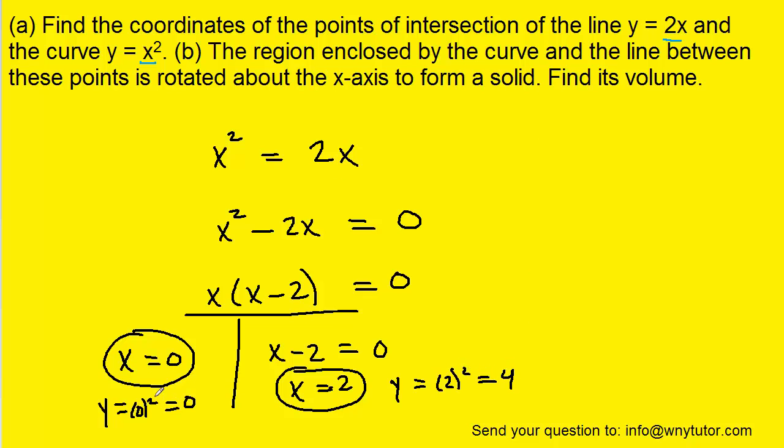So the final points of intersection become (0, 0) as well as (2, 4). This would be the correct answer to part A of the question.